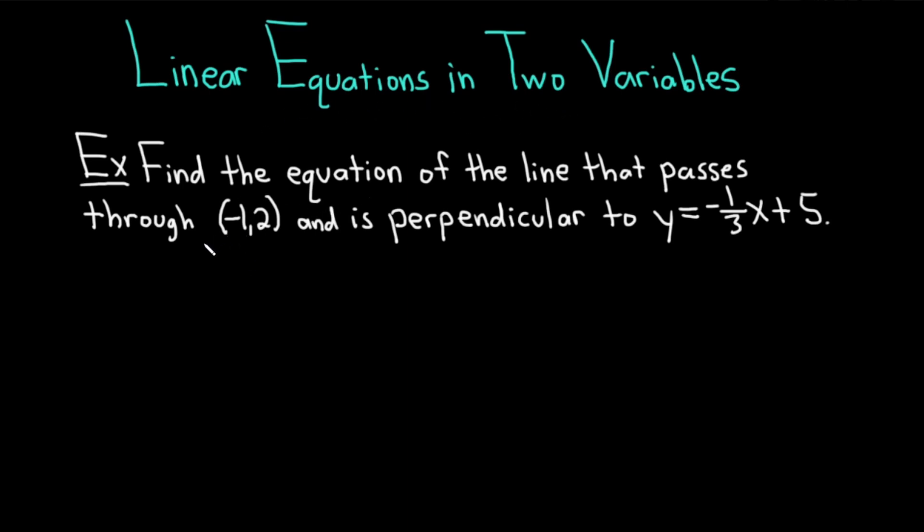Let's work through this example very carefully. The question says, find the equation of the line that passes through (-1, 2) and is perpendicular to y = -1/3x + 5.